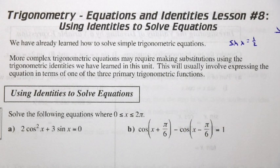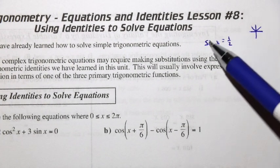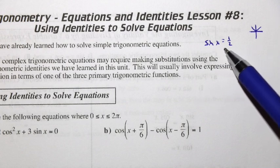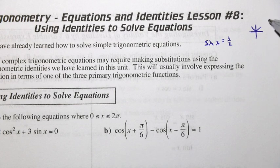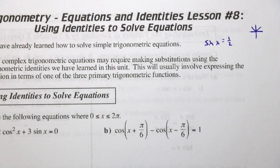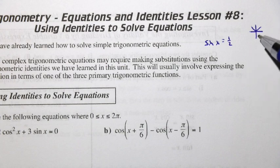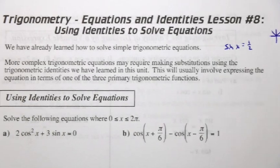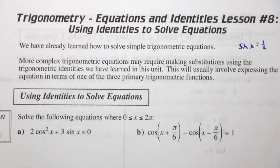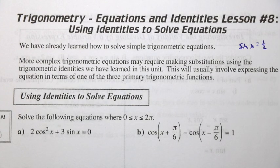We've already learned how to solve simple trig equations. Think about an example like sin x = 1/2. We draw a little diagram and can see that it happens in two places: 30 degrees and 150 degrees, or in radians π/6 or 5π/6. We can get a general solution if required. But for more complex trig equations, it may require making substitutions from our formula sheet.